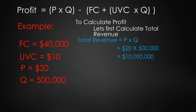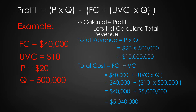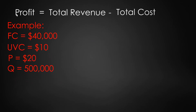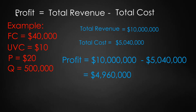Now for total cost: fixed cost plus variable cost. That is $40,000 plus unit variable cost of $10 times quantity sold of 500,000, giving variable cost of $5,000,000. So total cost is $40,000 plus $5,000,000, which equals $5,040,000. Now we can compute profit: $10,000,000 minus $5,040,000 gives us a profit of $4,960,000.